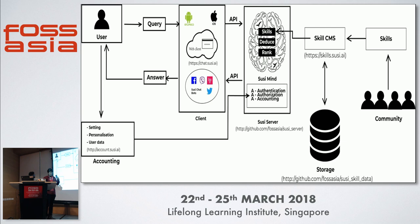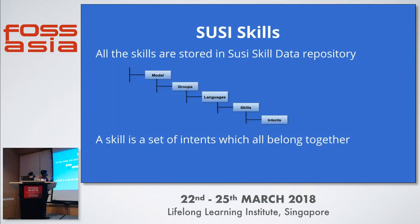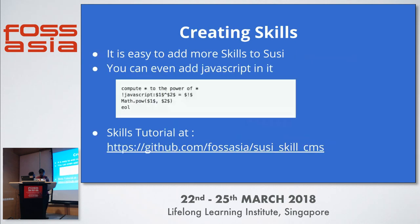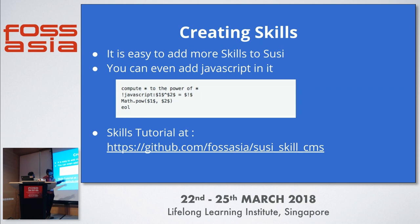SUSI skills, stored in the skill data repository, follow a hierarchy: models, which are general, tutorial, or personas; groups like business, games, trivia, and others; languages — SUSI is available in all languages; and skills, which are intents clubbed together belonging to the same group. All of these are stored in the SUSI skills data repository. Creating skills is very easy — you can even add JavaScript code. One example skill computes the power of a number. The tutorial is available on the SUSI Skill CMS.